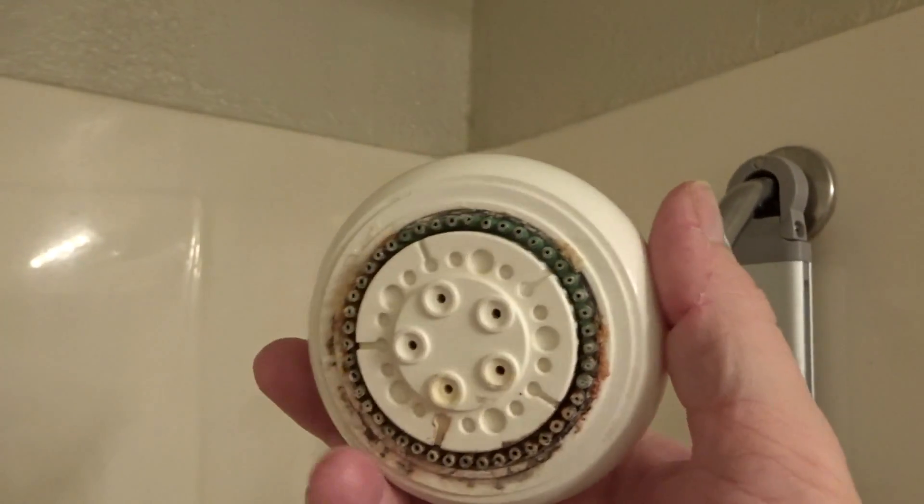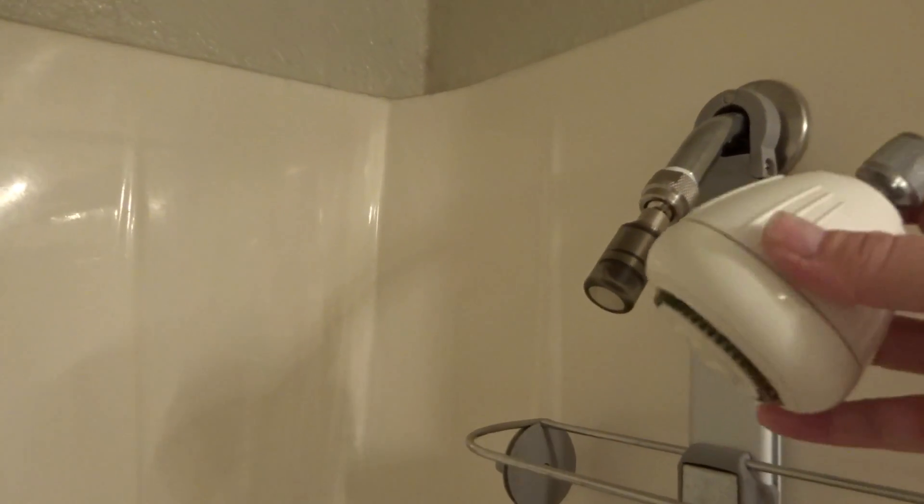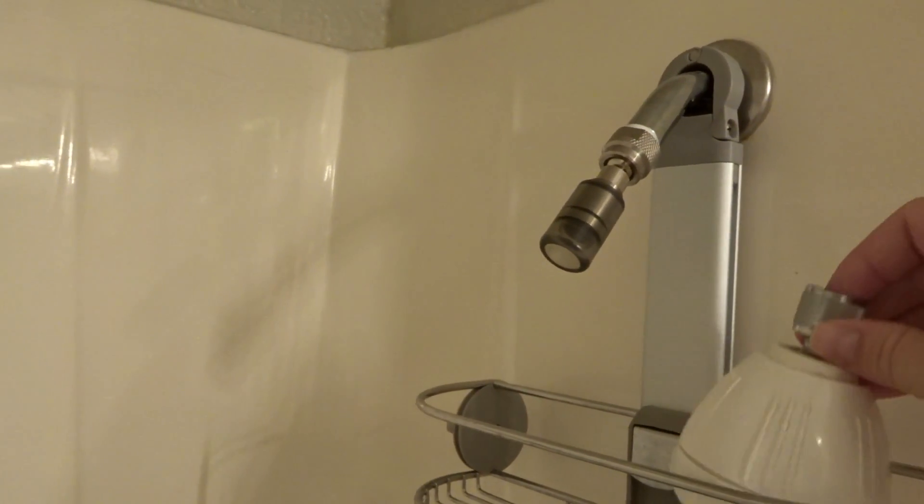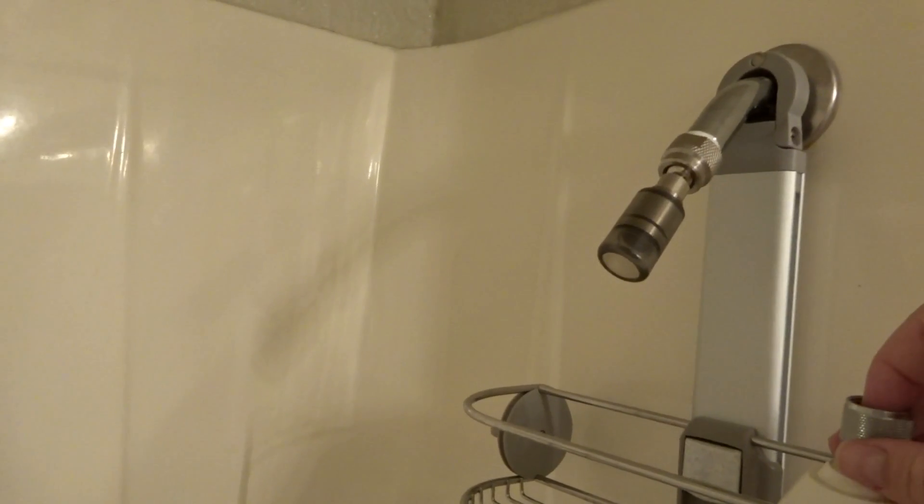So that means this shower head would release two and a half gallons of water per minute, which is the federal maximum allowed. In fact, 99% of shower heads, if you go to Home Depot, Lowe's or whatever, they're all 2.5 GPM. If you have a shower head and you don't know what it is, chances are it's 2.5.